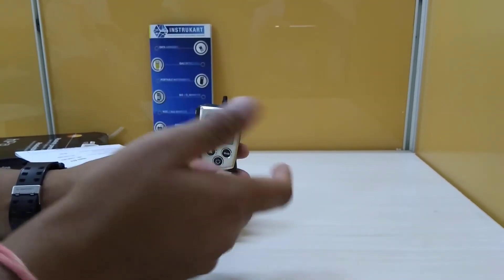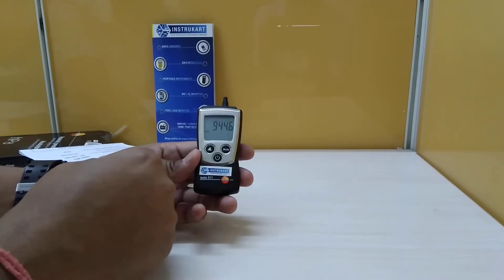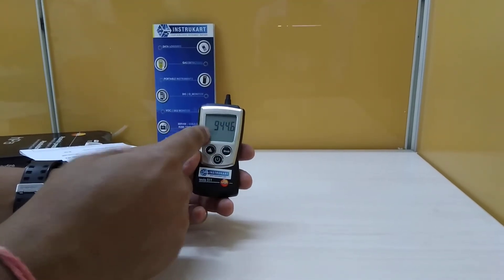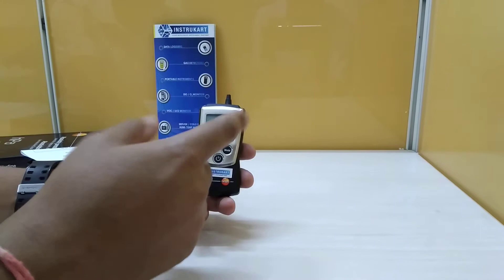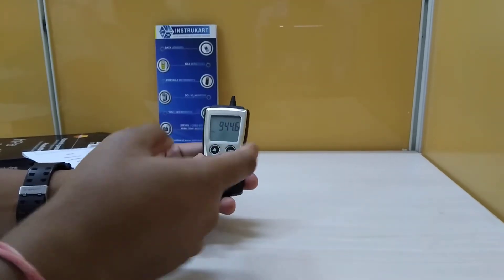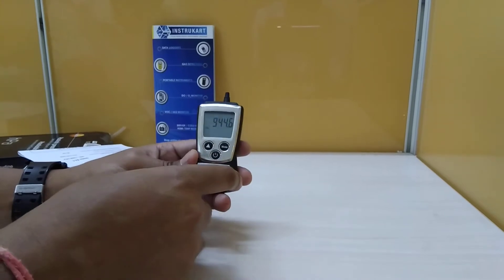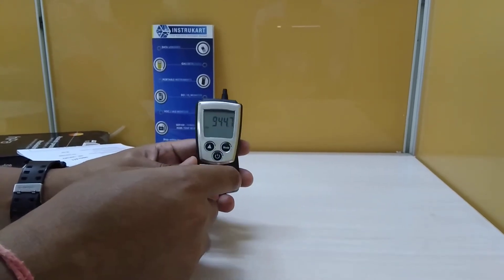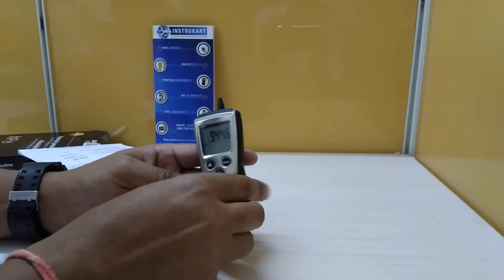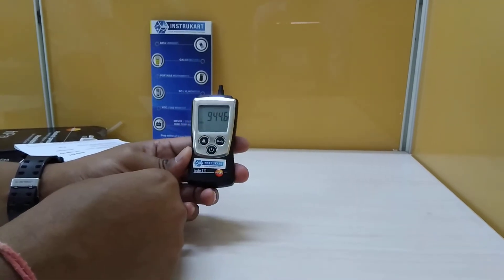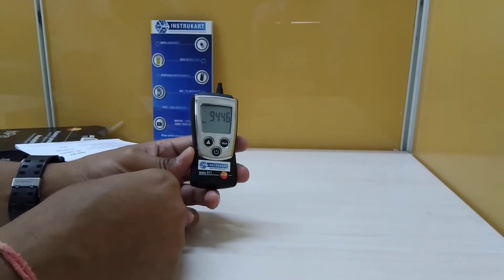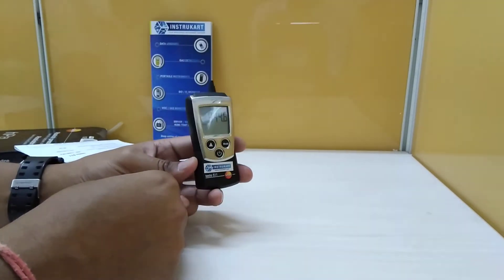This has a parameter of absolute and barometric with engineering units of Pascals, hPa, millibar, mm H2O, mm Hg, inches Hg, inches H2O, and psi. The measuring range is 300 to 1200 hPa, and the resolution is 0.1 hPa.